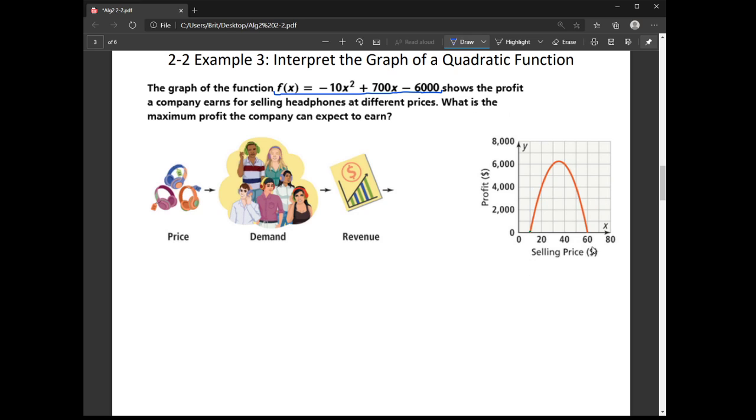Alright, so here I have a parabola showing the graph of this quadratic. And so our maximum profit, our maximum Y value, is going to be on the vertex right here. And so we don't know quite where that vertex is, so we have to calculate it.